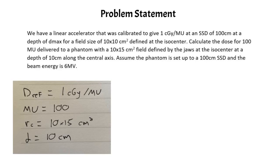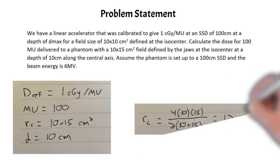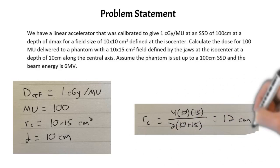Also note that our field size is not square — it's rectangular. So we need to calculate an equivalent square field size using the 4A/P formula, and that calculation is shown here. It gives us a collimator equivalent square field size of 12 centimeters, which is what we will use in our calculations.